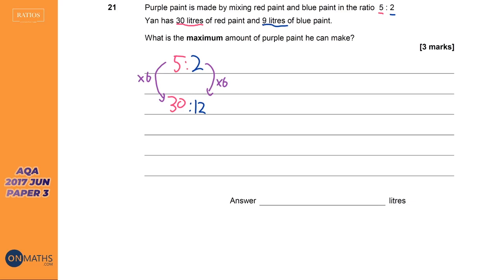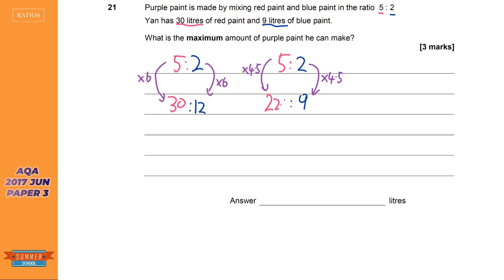We don't have 12 liters of blue paint — we only have 9 liters — so it's the blue that's going to run out. So we start again, completely ignoring the 30 liters of red paint. We figure out how much red paint we need for our 9 liters of blue. It's a calculator paper — paper 3 on AQA is calculator — so I do 9 divided by 2 which gives 4.5. I times both sides by 4.5, so 5 times 4.5 gives 22.5 liters of red.